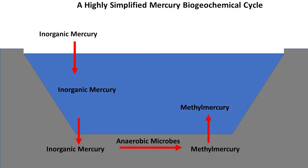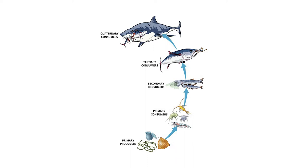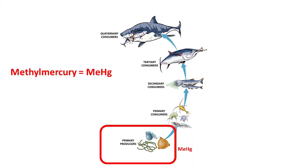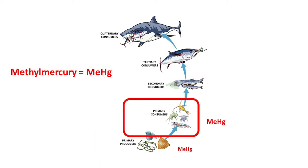Methylmercury is released into the water column from sediments, where it enters aquatic food chains, making its way into fish. This is a typical marine food chain. Methylmercury typically enters at the base of the food chain, which is occupied by phytoplankton, and is easily transferred from a lower to a higher trophic level.